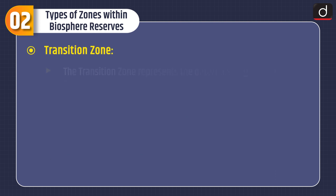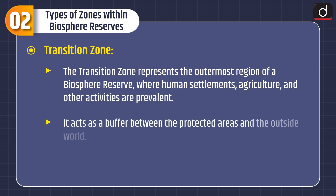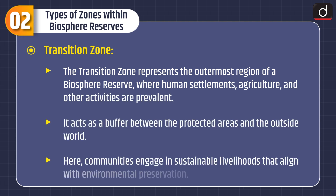The third one is the Transition Zone. The transition zone represents the outermost region of a Biosphere Reserve where human settlements, agriculture, and other activities are prevalent. It acts as a buffer between the protected areas and the outside world. Here, communities engage in sustainable livelihoods that align with environmental preservation.